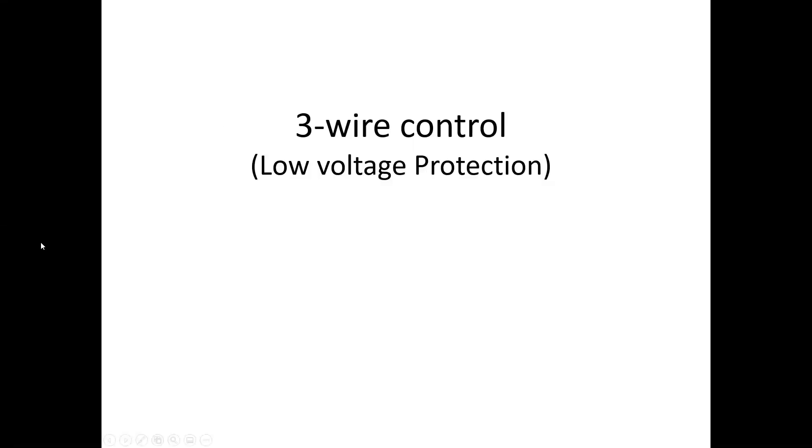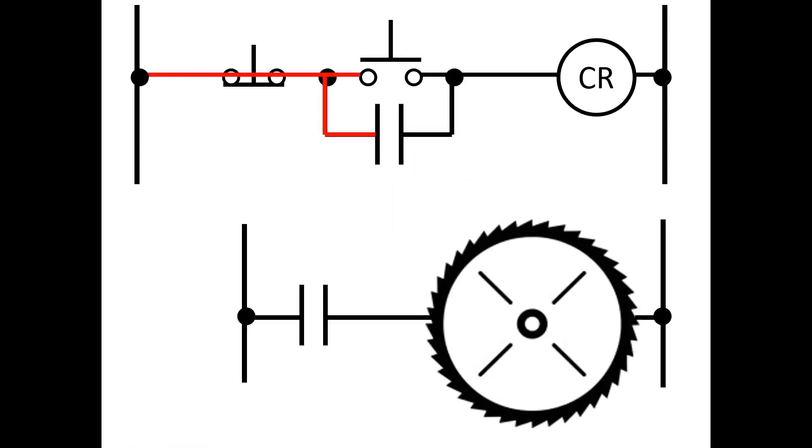Three-wire control, low voltage protection. This type of control utilizes two separate field devices, a normally closed and a normally open, typically but not always, for the starting and stopping portion of the circuit. And they're momentary contact devices, as in they're spring loaded and they return to their original position once they have been released by a user.